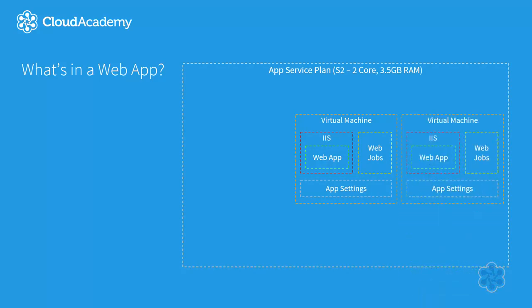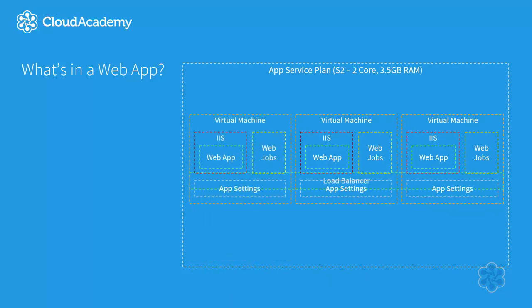If you scale your app service plan to contain multiple instances, Azure App Service will manage routing traffic to your application by way of a load balancer. As a developer, you have the option to enable round robin, which means the load balancer routes users based on the load of each virtual machine, or with sticky sessions, which are the default. Sticky sessions will return users to the same virtual machine instance for the lifetime of their session, simplifying application development as you don't have to manage something like a user's session, such as a shopping cart, across postbacks.